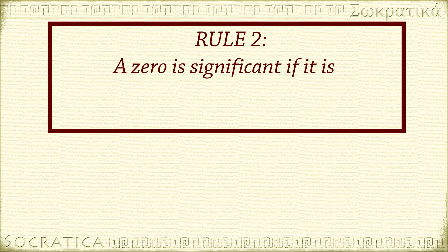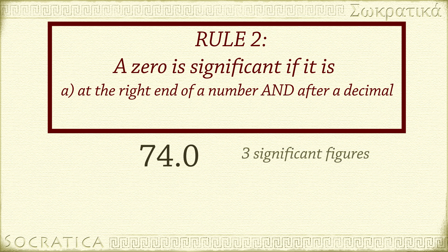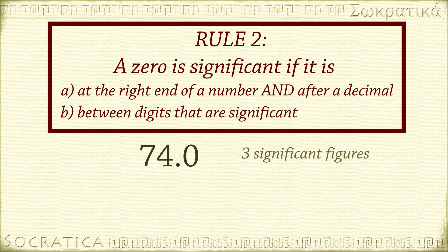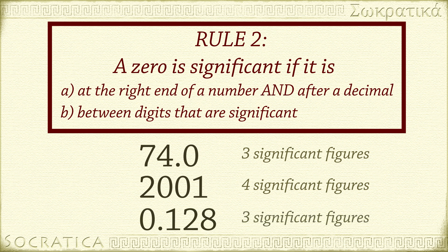Rule number 2: a zero is only significant if it is (a) at the right end of a number and after a decimal place — 74.0 has three significant figures — or (b) between digits that are significant according to rules 1 and 2. So in 2001, the zeros in the middle are significant. Zeros to the left of non-zero digits, or at the end of a whole number, are placeholders and are not significant. For example, 0.128 has three significant figures; that first zero is just a placeholder.